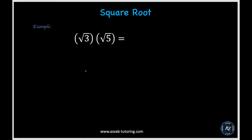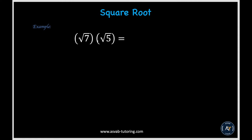Now let's learn how to multiply square roots. If you want to multiply square roots, you only need to multiply inside to inside and outside to outside. So that gives you 3 times 5 is 15. How about this one: 7 times 5 is square root of 35.